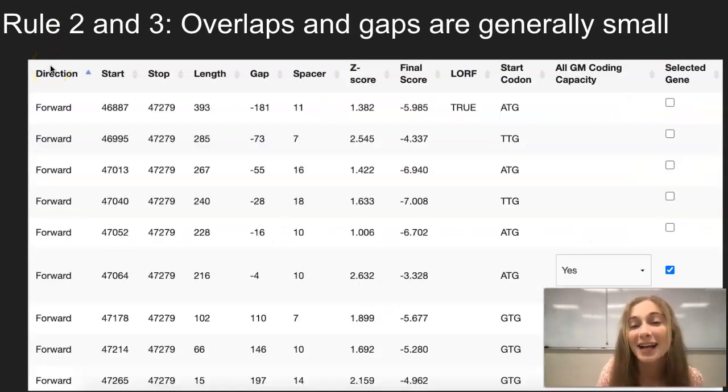Rules two and three talk about overlaps and gaps and how they're usually pretty small. In this column right here, overlaps are the ones with the negative sign and gaps are the ones with the positive sign. The general rule of thumb is that the largest acceptable gap or overlap is 30 base pairs. Because in nature, genes are very tightly packed, so there's not a whole lot of room for gaps.